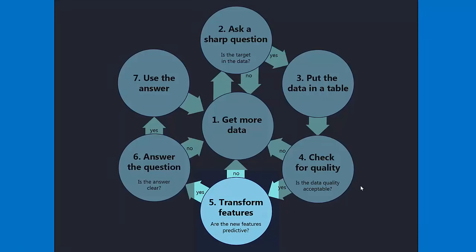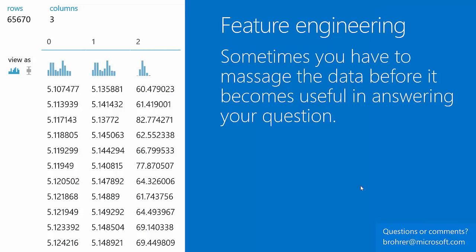The next step is to transform features and ask: are the new features predictive? Sometimes the data you get needs a little bit of massaging before it can help you answer your question. This is called feature engineering — a fancy word for taking the features you already have and doing something to them: changing them, combining them, or breaking them down.